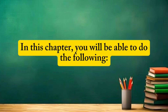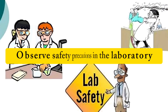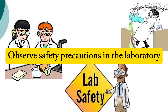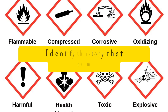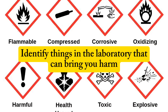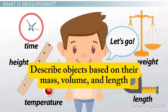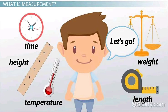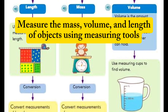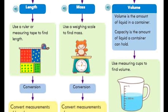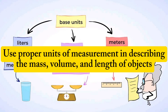In this chapter, you will be able to do the following: observe safety precautions in the laboratory; identify things in the laboratory that can bring you harm; describe objects based on their mass, volume, and length; measure the mass, volume, and length of objects using measuring tools; and use proper units of measurement in describing the mass, volume, and length of objects.